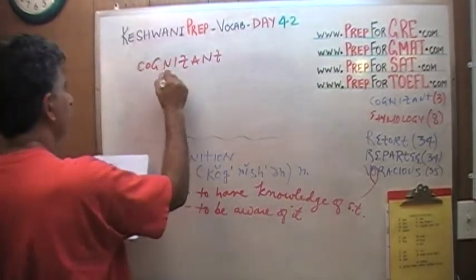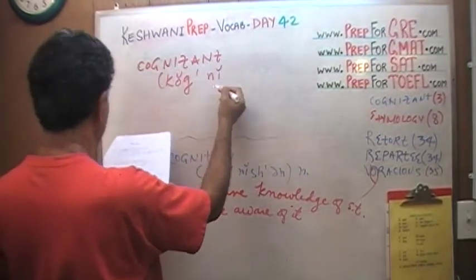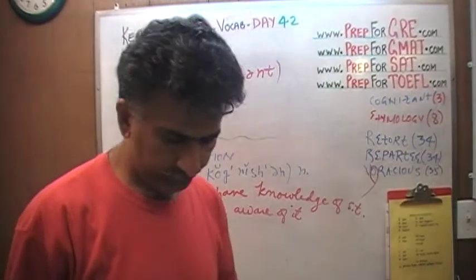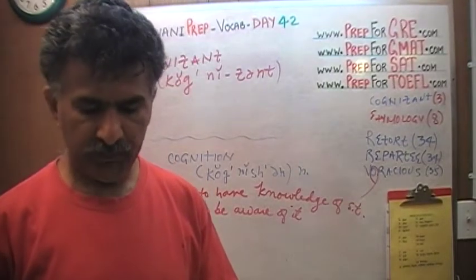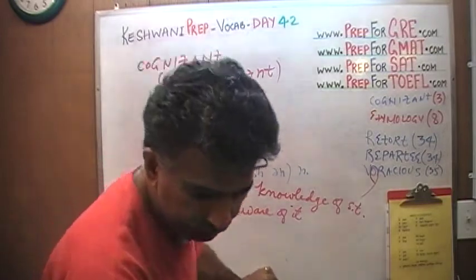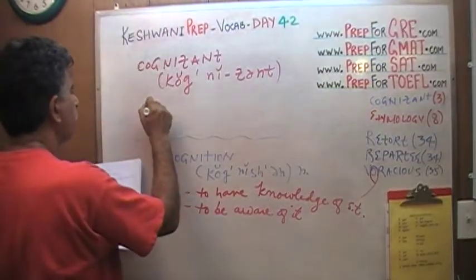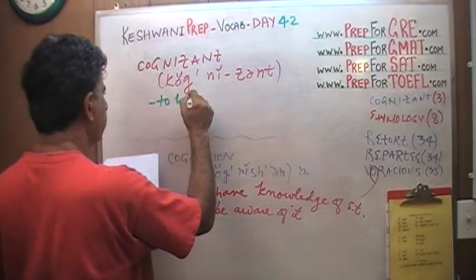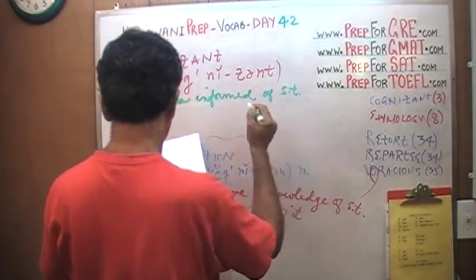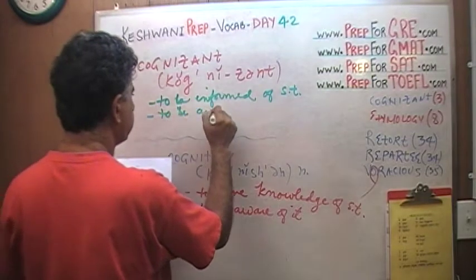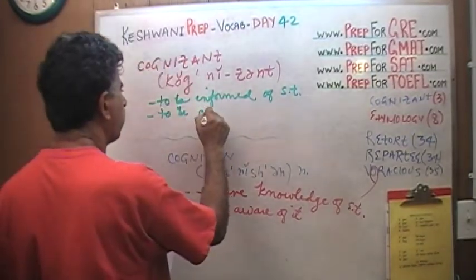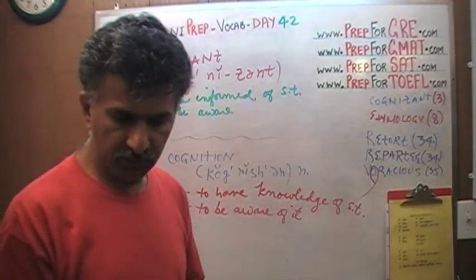Another word related to cognition is: cognizant. To be cognizant of something means to be aware of something, to be informed of something.